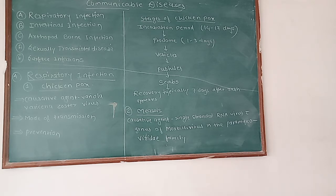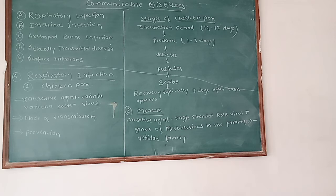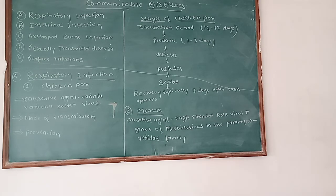Pustules are patches of skin full of yellowish fluid called pus. Then come scabs — a mask of dried blood that forms over a part of the body. After an injury heals on the skin, the dark dried skin that forms is what we call a scab.